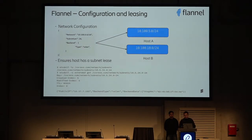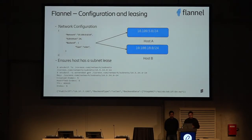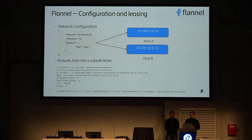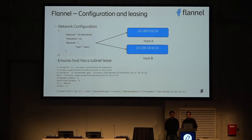It is Flannel's responsibility that each host has the subnet lease for the required amount of time. Since each host has a subnet address and its own public IP address, Flannel keeps that mapping. Using the etcdctl command you can see a subnet like 10.5.34.0/24 with its public IP maintained there. So Flannel has an overview of all clusters, knowing which subnet is associated with which public IP, and thus how to route a packet from one node to another.